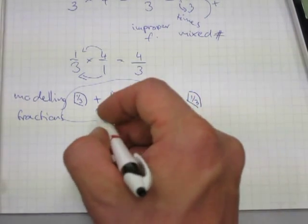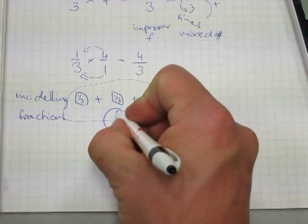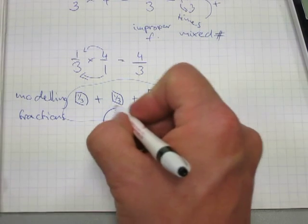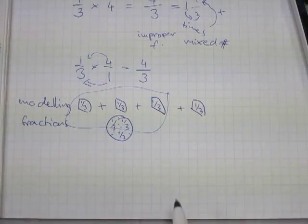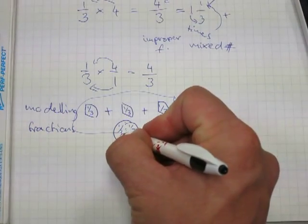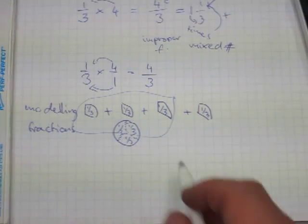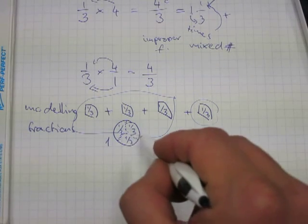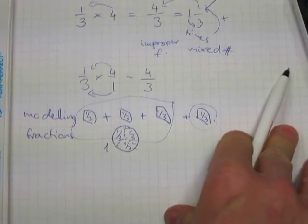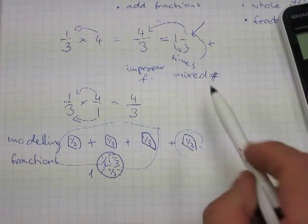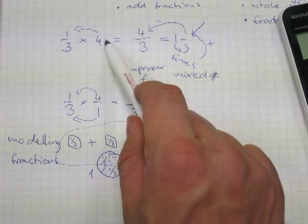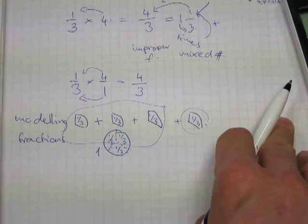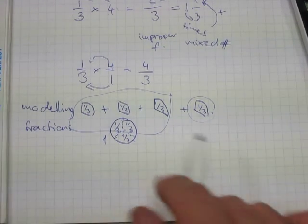When we rotate these thirds together, three of them make a full circle — there is one-third, there is one-third, and there is the third third. Three-thirds make a whole pizza. Plus we have one-third left unaccounted for. So we have one whole and one-third, which is the same as four-thirds total, or one and one-third in mixed number form.